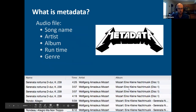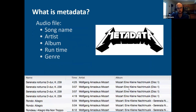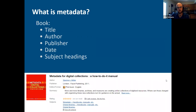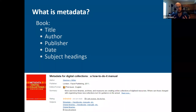A classic example: if you listen to music on your computer or phone, there's information about the audio file — the song title, who recorded it, how long it is, what genre it is. That's metadata about those audio files. Another example familiar to library workers is a catalog record: a MARC record is metadata — it's information about the book being described, the title, the author, the subject headings — all the information that helps people find and access the book.